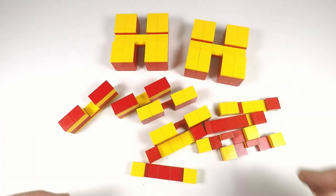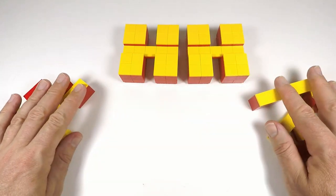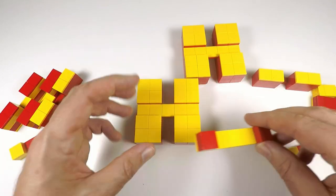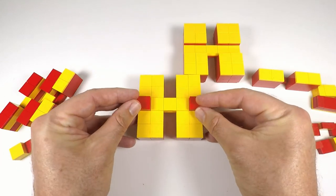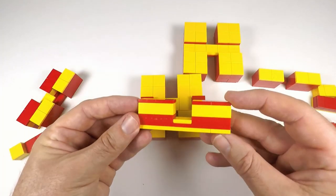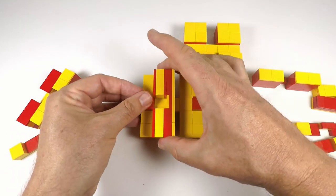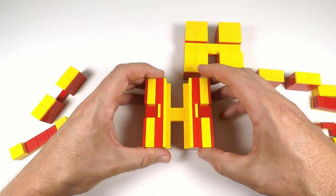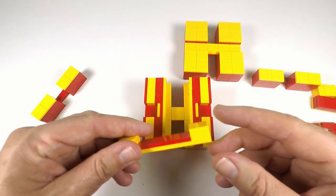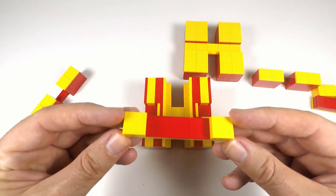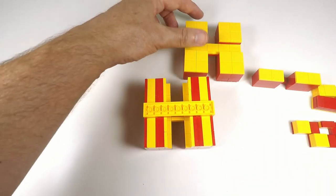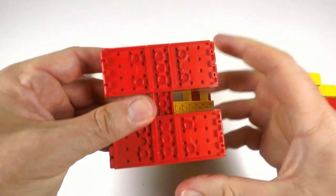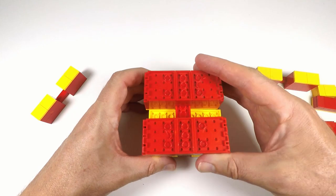So we're going to put it all together. First of all, we're going to start with one of these bases. Next, you're going to grab this piece here and sit it on top. We need to get 2 of these pieces. We'll pop that onto the end here, and the other one just sits on the end over this side. We'll find one of these again and pop it on like that. Now we grab this base piece and put it on top just like that.